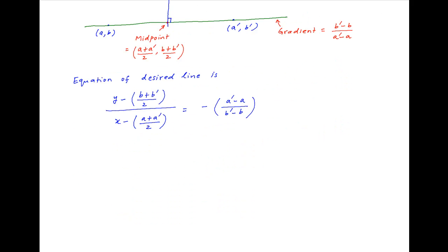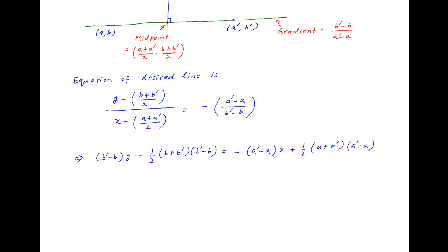Cross multiplying, we get (b' - b)(y - (b + b')/2) = -(a' - a)(x - (a + a')/2). This can be rearranged as (a' - a)x + (b' - b)y = (1/2)(b'^2 - b^2) + (1/2)(a'^2 - a^2).